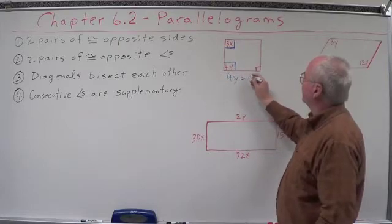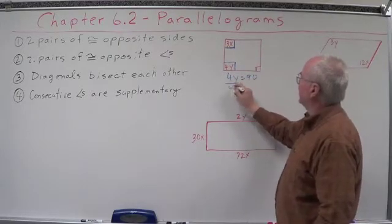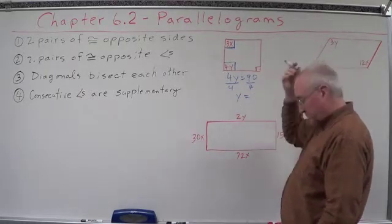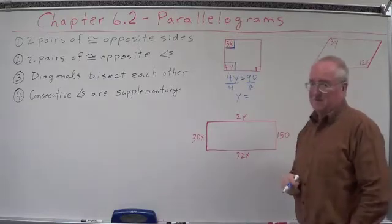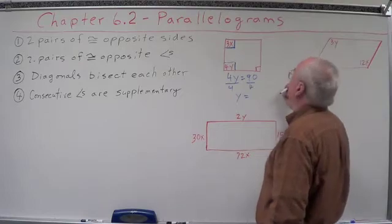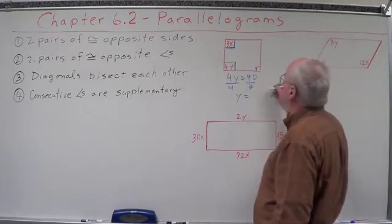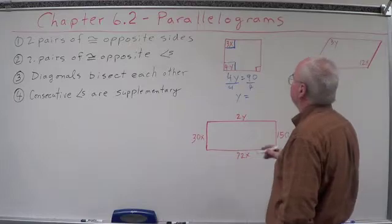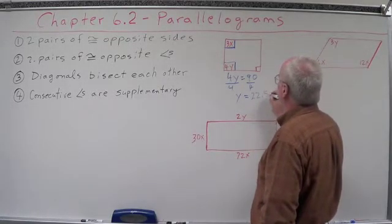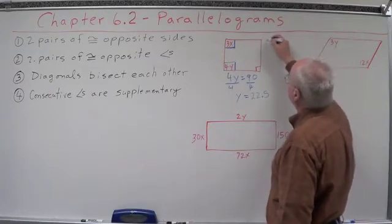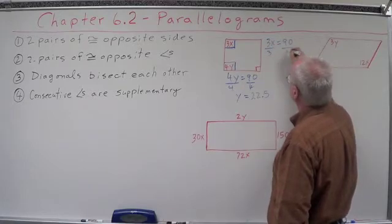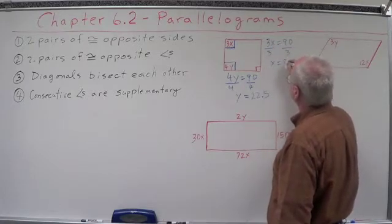So, 4y equals 90 divided by 4, y equals 22.5, I think. Alright, and up here, 3x equals 90, divided by 3, x equals 30.